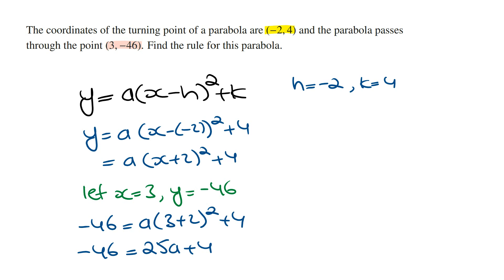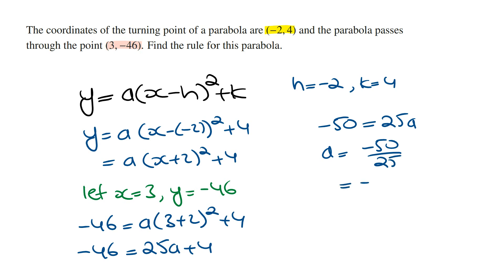Rearranging this to solve for a: minus forty-six minus four, which is minus fifty, is equal to twenty-five a. Dividing both sides by twenty-five, a is going to be minus fifty divided by twenty-five, which means the value of a is equal to minus two. Therefore, the rule of this parabola is going to be y is equal to minus two times x plus two, all squared, and then plus four.